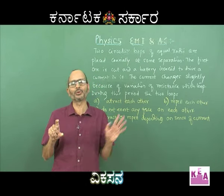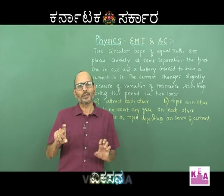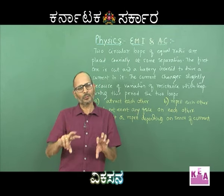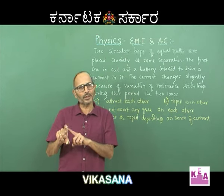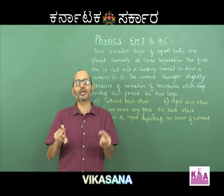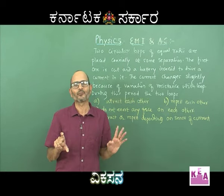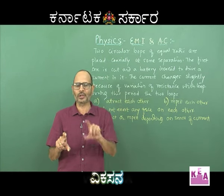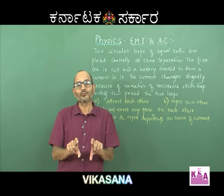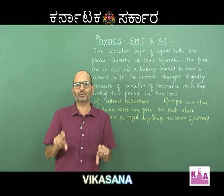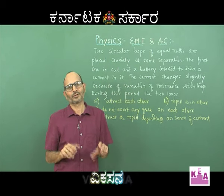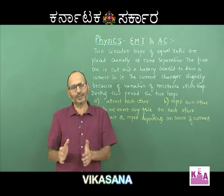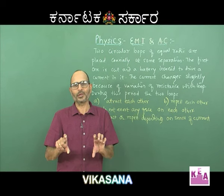The second coil had no cut and no battery, yet the changing flux induces an EMF that drives a current through it. By Lenz's law, since the flux is decreasing, this must be opposed. The flux is decreasing because the magnetic field is decreasing. To oppose this decrease, the second coil must come closer to the first so that more lines of force pass through it — opposing the decrease in flux.